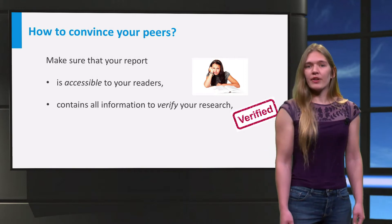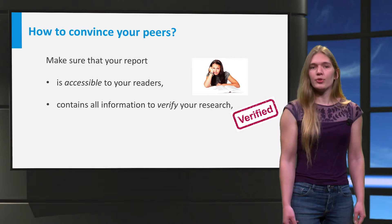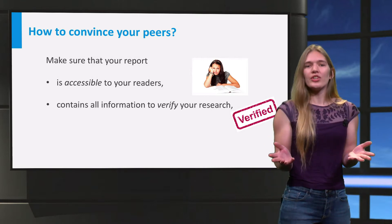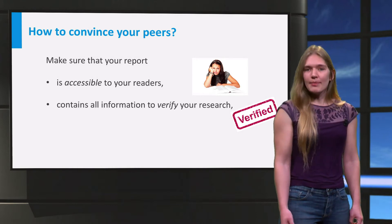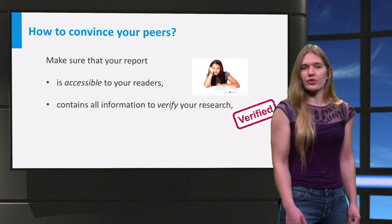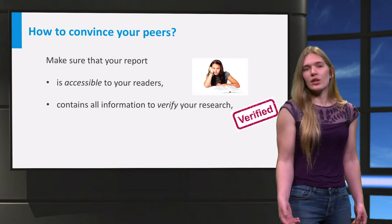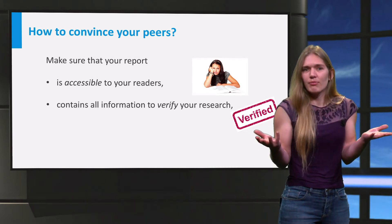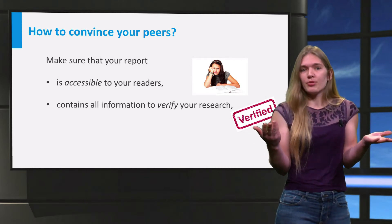The second step is to provide the reader with all the necessary information to be able to duplicate your research. This is the gold standard of scientific reporting. Your reader should be able to independently verify or falsify your results. After reading your report, your reader should not be left with any questions — like: where did this balance equation suddenly come from, or why does the author only look at stable equilibrium solutions?